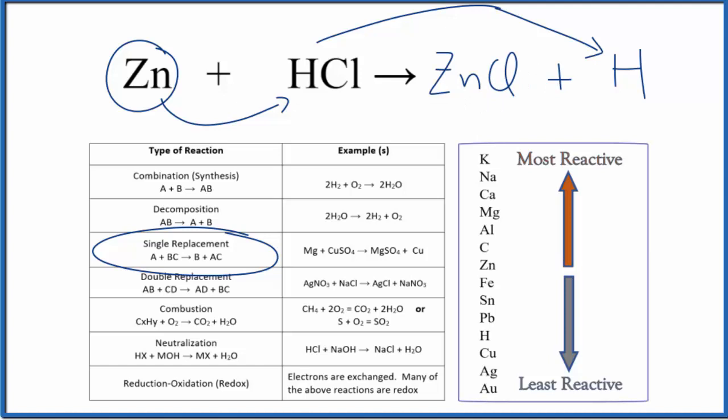We can check and see if this happens by looking at an activity series here. So we can see that zinc is right here. It's actually above the hydrogen, so the zinc is more reactive. So it will be able to push out the hydrogen and then bond with the chlorine.